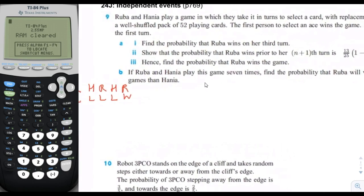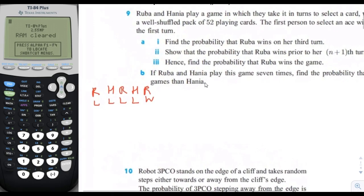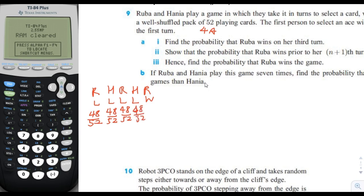To win you must select an ace. There are four aces in a deck of 52. The chance that Ruba loses on the first turn is she chose a non-ace, so 48 out of 52. Then Hania also drew one of the 48 non-aces. Since it's with replacement, the card is put back each time, so the fraction each turn is 48 over 52.